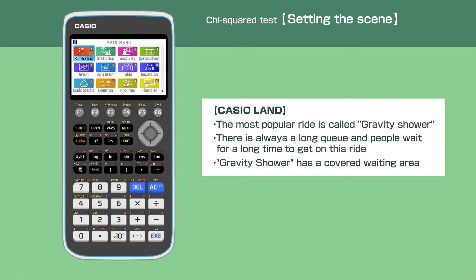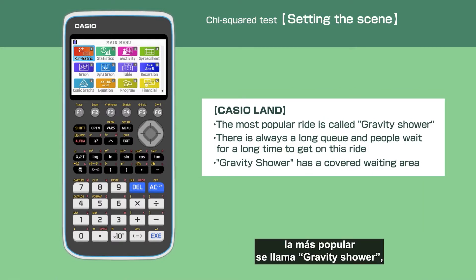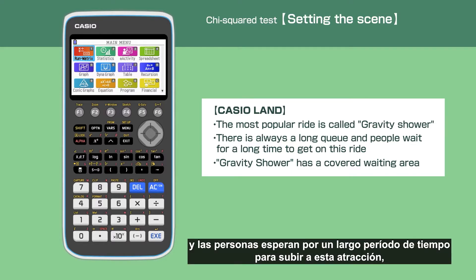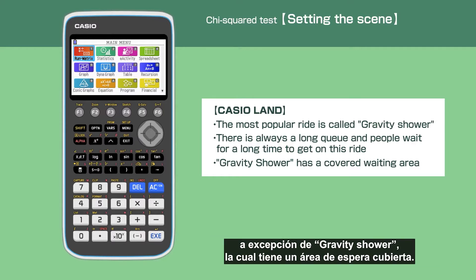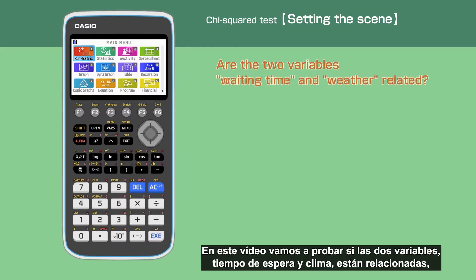The theme park Casio Land has 32 rides. The most popular ride is called Gravity Shower — there's always a long queue and people wait a long time to get on this ride. Most rides in Casio Land are outside, except Gravity Shower which has a covered waiting area.